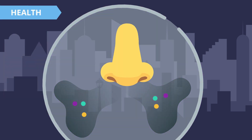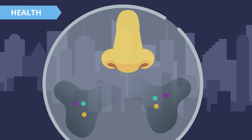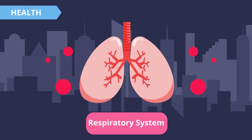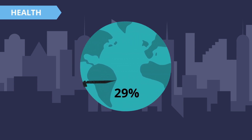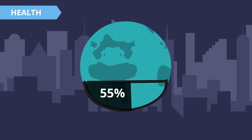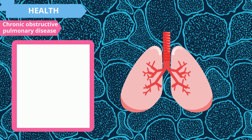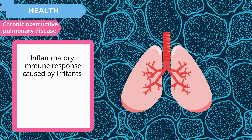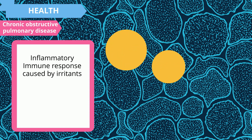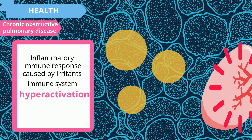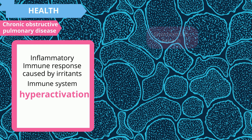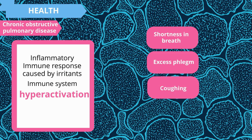Air pollutants float in the air that we breathe daily, so an organ that is ultimately impacted is our lungs, and in general, our respiratory system. Worldwide, air pollution is responsible for about 29% of deaths per year, and 55% of these deaths are attributed to respiratory infections. A disease predominantly resulting from air pollutants is chronic obstructive pulmonary disease, or COPD. COPD is characterized by an inflammatory response in the airways from air irritants. When noxious particles or gases enter our body, our immune system becomes hyperactivated and secretes molecules that inflame and damage our lungs, eventually causing shortness of breath, excess phlegm, and coughing. Air pollutants can not only cause development of COPD, but can further impair already reduced pulmonary function, or at worst, lead to death in COPD patients.